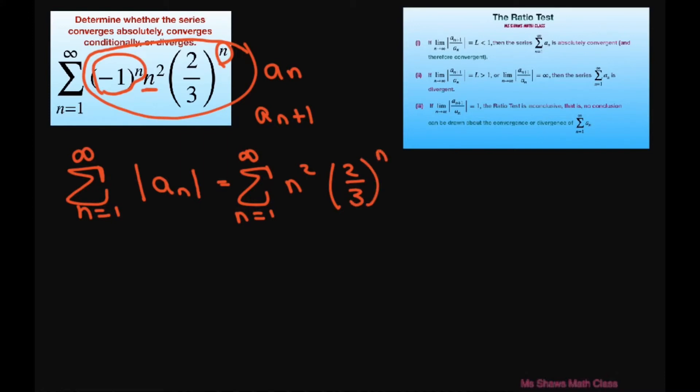Alright, let's do the ratio test now. We're taking the limit as n approaches infinity of absolute value of a sub n plus 1 divided by a sub n. Now if it's less than 1, our limit, then it converges absolutely.